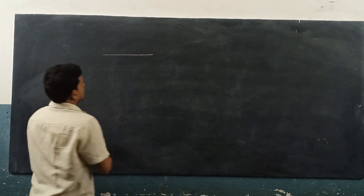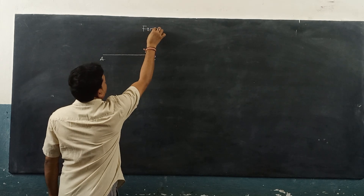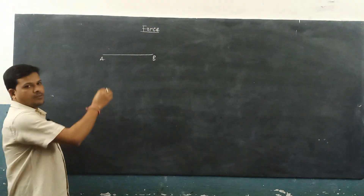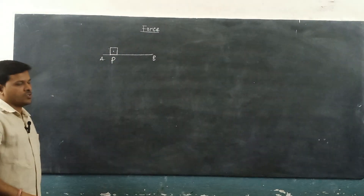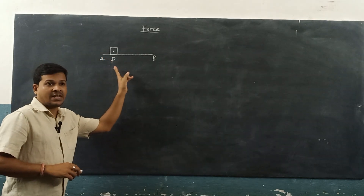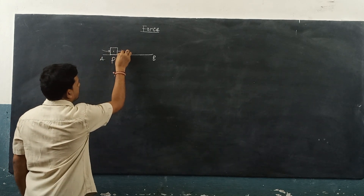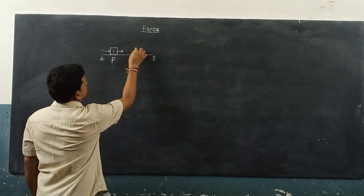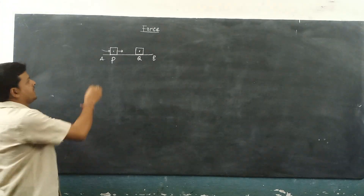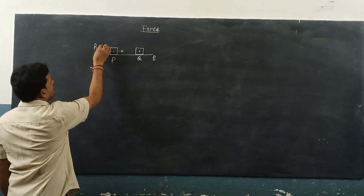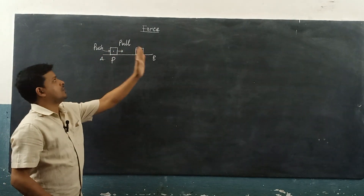Let us consider a plane AB. AB is a plane and a block is here. The position of the block is at P, and the block is at rest. If you try to change the position of the block on the plane AB, then either you have to push the block or pull the block. Then the position of the block changes from P to Q on the plane — only when it is pushed or pulled.